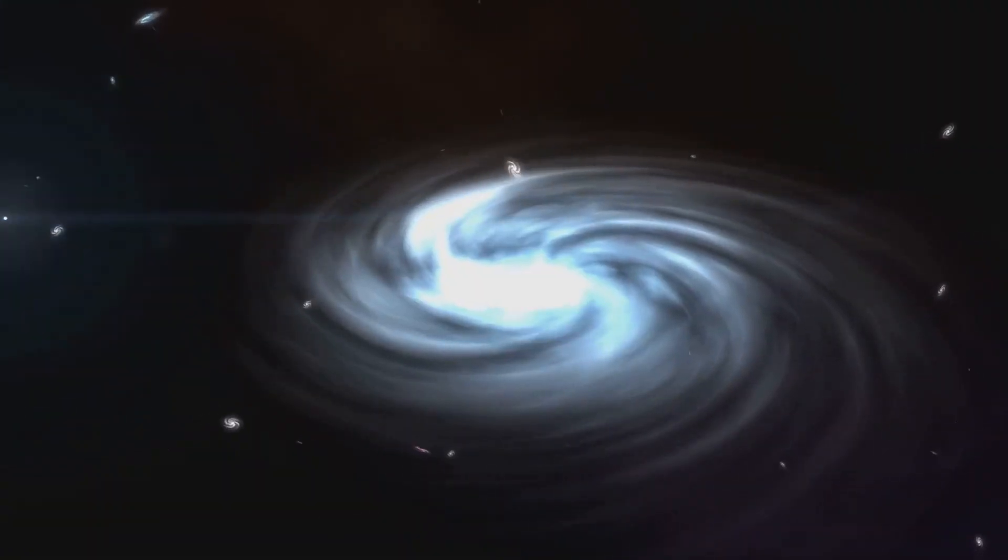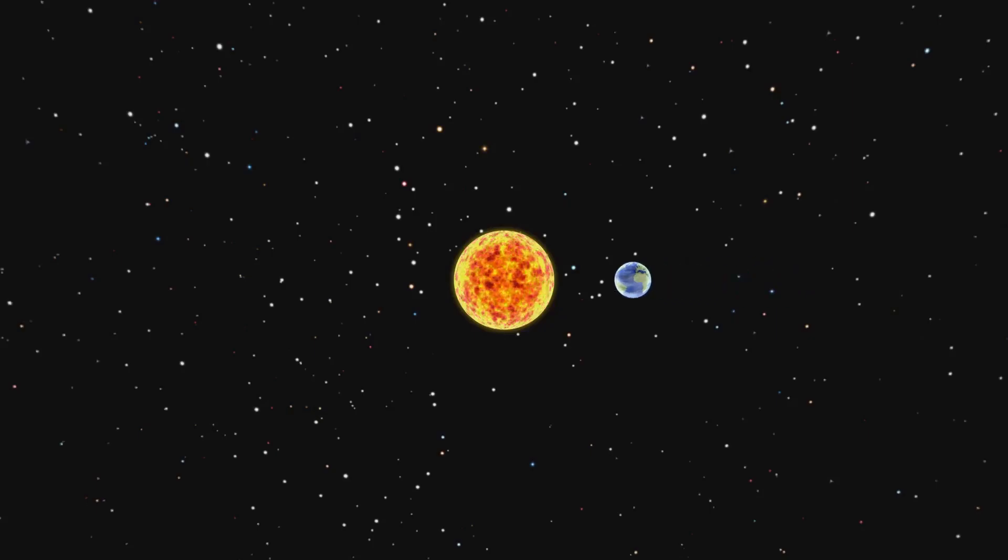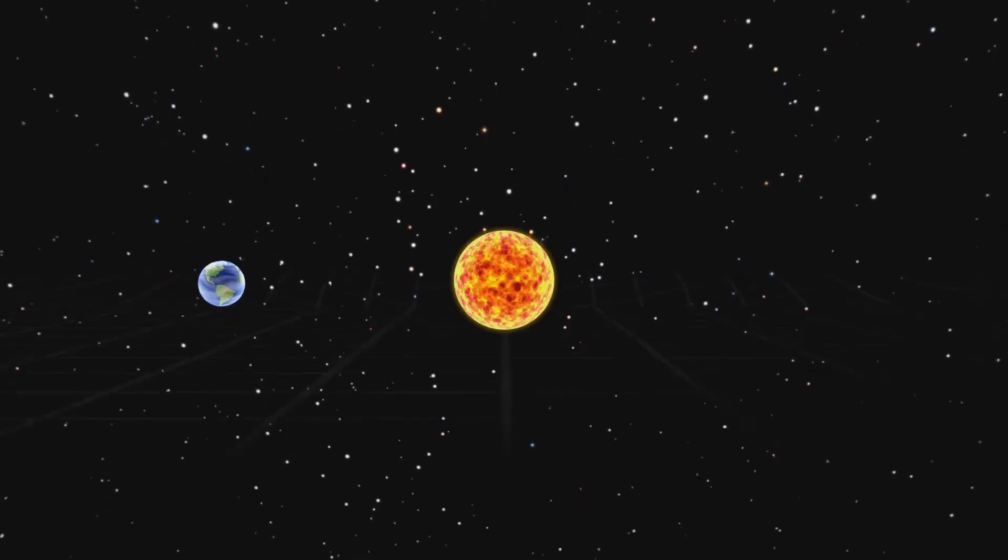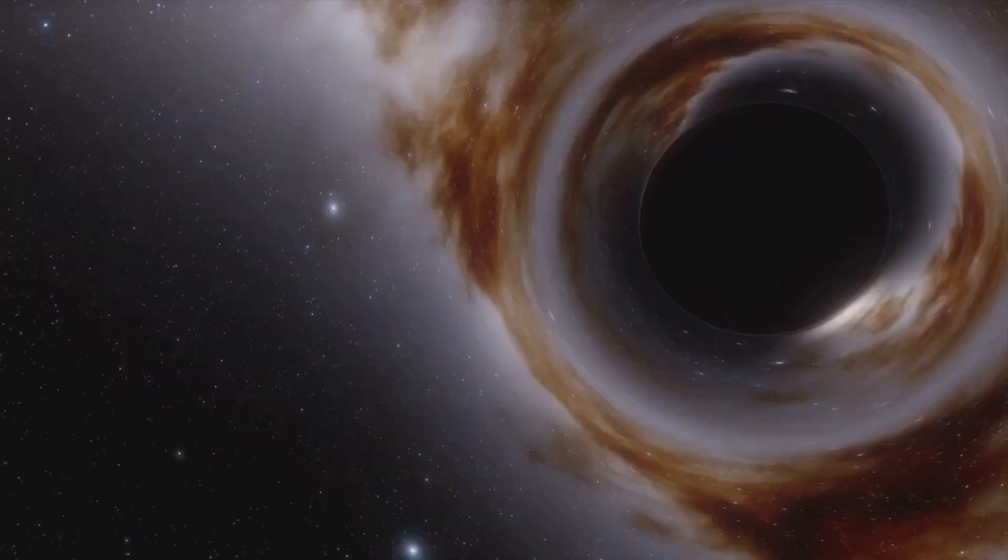It shapes how objects move, acting like a cosmic director guiding celestial bodies in their paths. Imagine a trampoline with a bowling ball sitting in the center. The heavy ball creates a curve, a dent in the fabric of the trampoline. This is similar to how a planet like our Earth curves space-time.